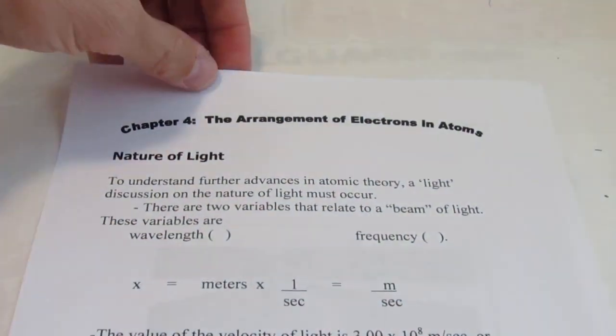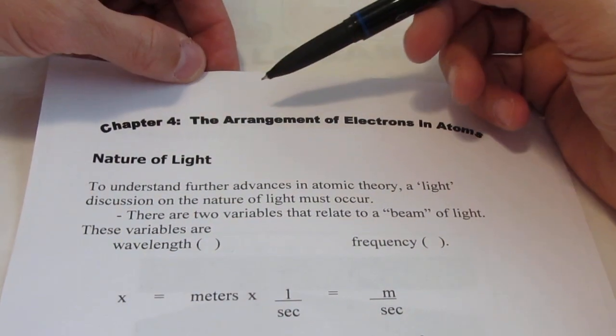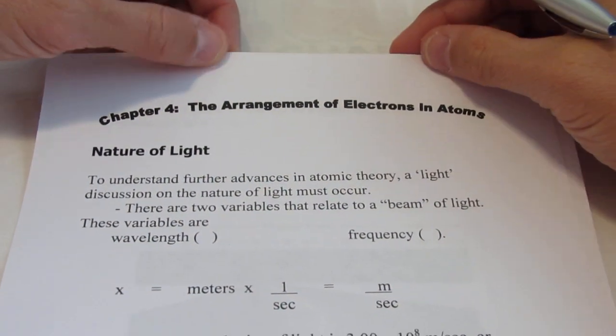Okay, welcome back. We're about to start a new chapter today. We're going to start chapter 4. It's entitled, The Arrangement of Electrons in Atoms.